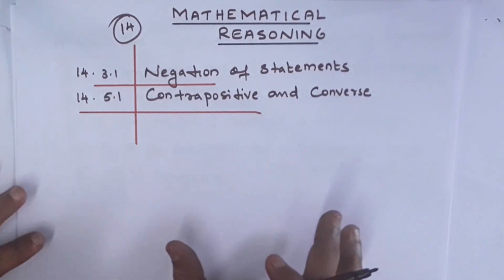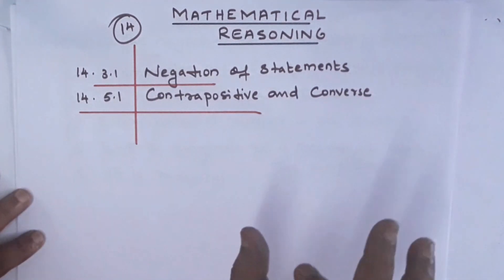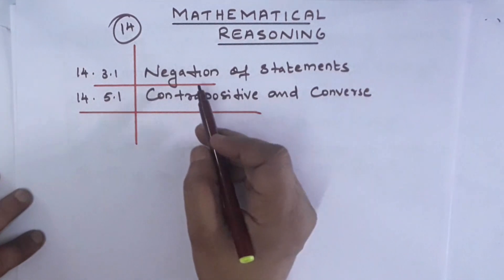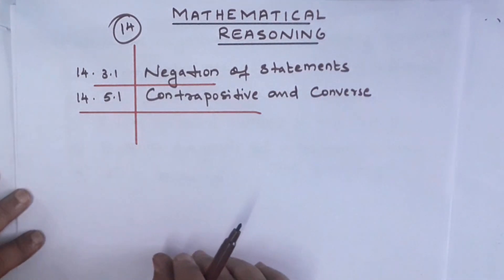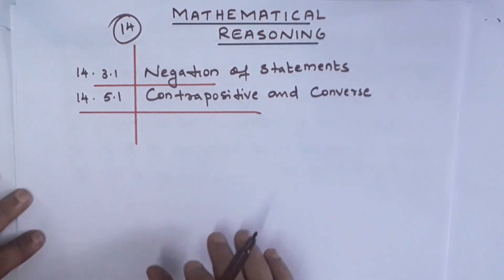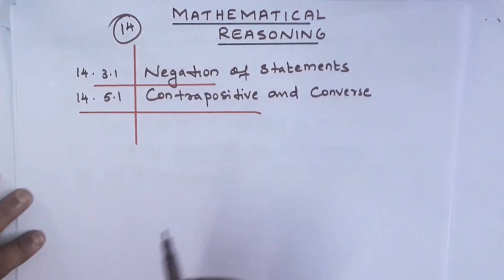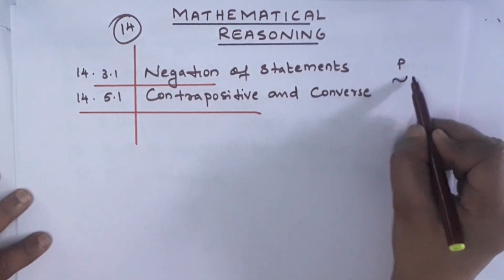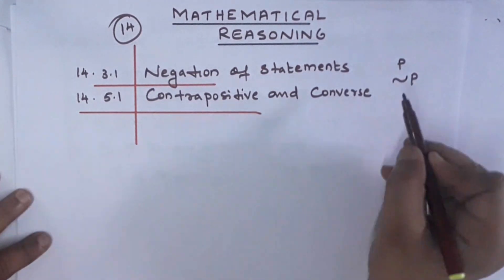The contradiction of a given statement is called negation. Negation of a statement is the denial of the statement — it is the opposite meaning. If P is a statement, we call its negation the negative of P.